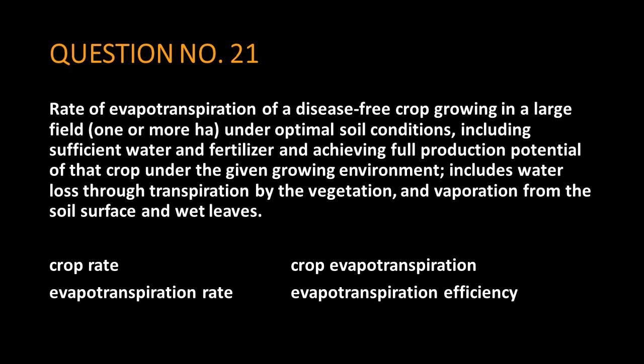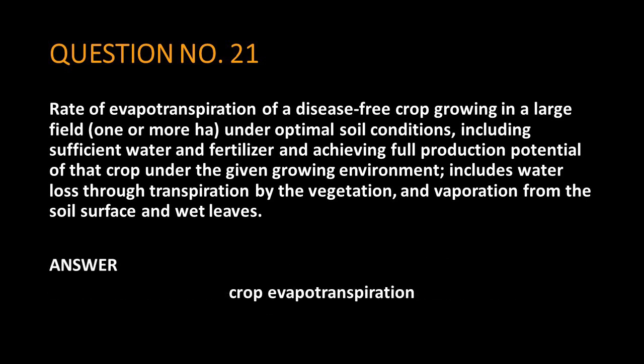Question No. 21. Rate of evapotranspiration of a disease-free crop growing in a large field, one or more hectare, under optimal soil conditions, including sufficient water and fertilizer and achieving full production potential of that crop under the given growing environment. Includes water loss through transpiration by the vegetation, and evaporation from the soil surface and wet leaves. The answer is: crop evapotranspiration.